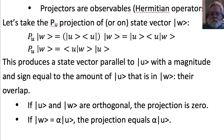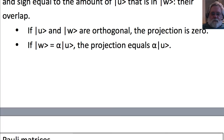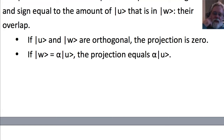So the result is a state vector parallel to ket u, with magnitude equal to the amount of u that is in w — their overlap. If u and w are orthogonal, there is no overlap, the inner product is zero, and the projection is zero. If w equals some complex number alpha times u, then the inner product is alpha and the projection will be alpha times ket u. We will use these projectors in the Pauli matrices and in the next lecture D3 on spin one-half states.